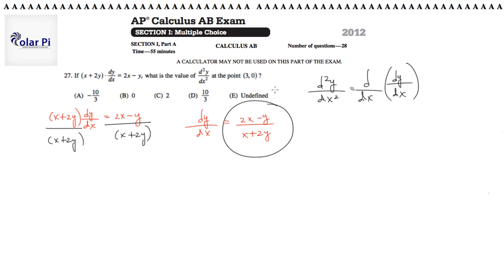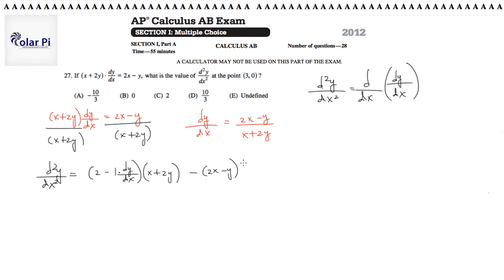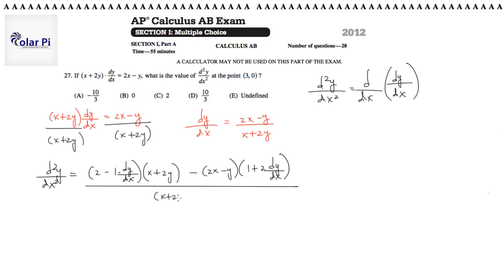So I just need to find the derivative of this. d²y/dx², the second derivative, is going to look like, applying the quotient rule: the derivative of the top, which is 2 minus 1 times dy/dx — because I just took the derivative of something that has a y in it — times the bottom, which is x plus 2y, and then minus the top, which is 2x minus y, times the derivative of the bottom, which is going to be 1 plus 2 dy/dx. All of this is divided by the bottom squared, which is (x plus 2y)².